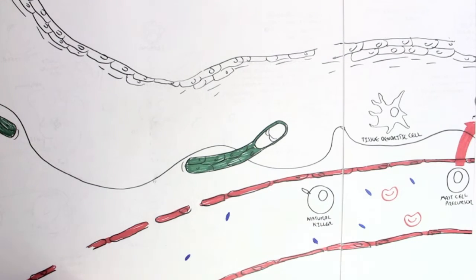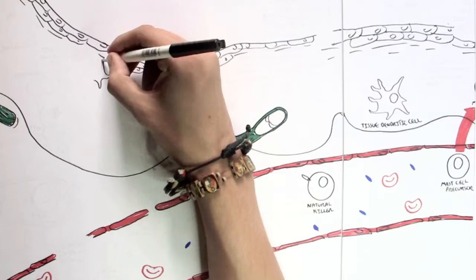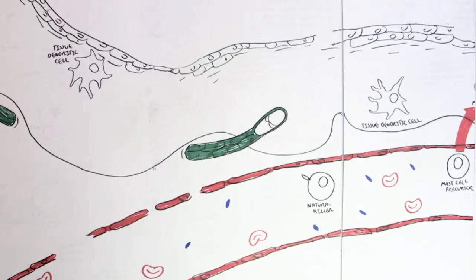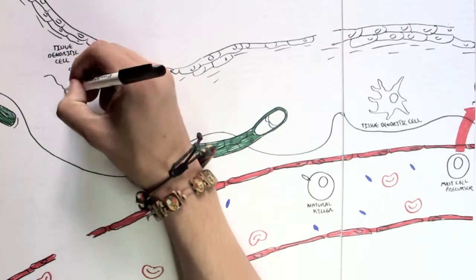And in the tissue above, we can see tissue dendritic cells and tissue macrophage, which are not activated yet, but are situated there as a defense mechanism.